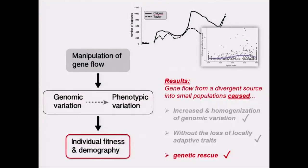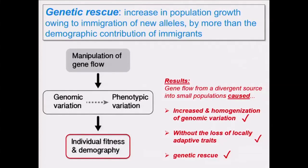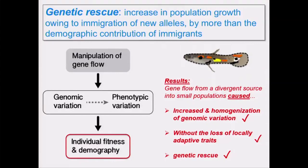Given these large increases in population size attributable largely to high hybrid fitness, we concluded that gene flow caused genetic rescue in both recipient populations — the increase in population growth due to the infusion of new genetic variation was beyond the demographic addition of immigrant individuals alone. This occurred despite immigration from an adaptively divergent source population, without causing loss of locally adaptive traits despite overall genomic homogenization. In fact, gene flow actually facilitated genetically based evolution of male color traits in the adaptive direction.